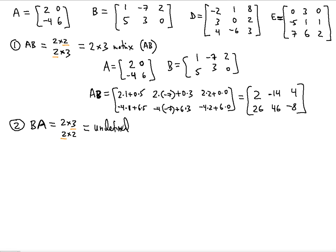If it's undefined, we shouldn't even try to multiply. You can see why it wouldn't work: when you try to multiply 1 and negative 7 with negative 4, then the number 2 doesn't get anything because there's nothing underneath negative 4. The shortcut: if the inner numbers don't match, it's undefined.